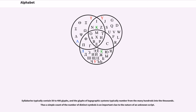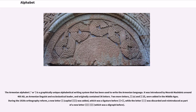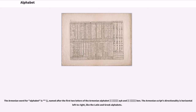Syllabaries typically contain 50 to 400 glyphs, and the glyphs of logographic systems typically number from the many hundreds into the thousands. Thus a simple count of the number of distinct symbols is an important clue to the nature of an unknown script. The Armenian alphabet, or Aybuben, is a graphically unique alphabetical writing system that has been used to write the Armenian language. It was introduced by Mesrop Mashtots around 405 AD, an Armenian linguist and ecclesiastical leader, and originally contained 36 letters. Two more letters, O and F, were added in the Middle Ages. During the 1920s orthography reform, a new letter was added which was a ligature before, while another letter was discarded and reintroduced as a new letter which was a digraph before. The Armenian word for alphabet is named after the first two letters of the Armenian alphabet, Ayb and Ben. The Armenian script's directionality is horizontal left to right, like the Latin and Greek alphabets.